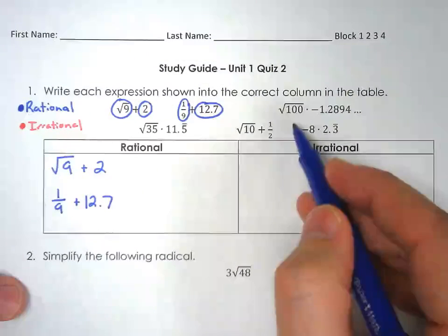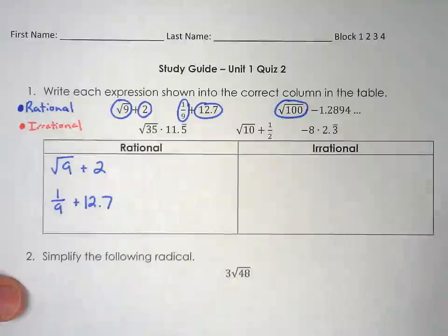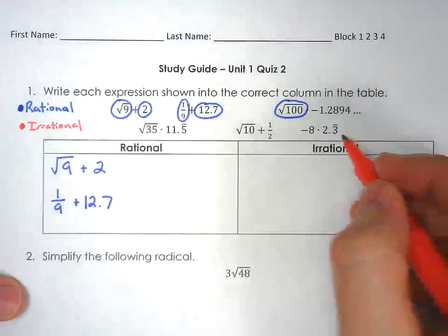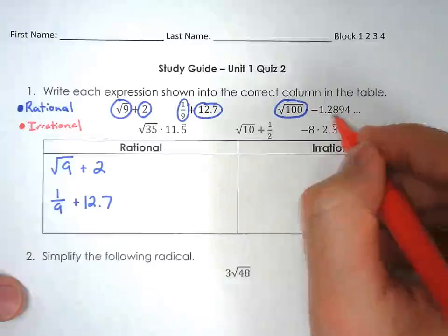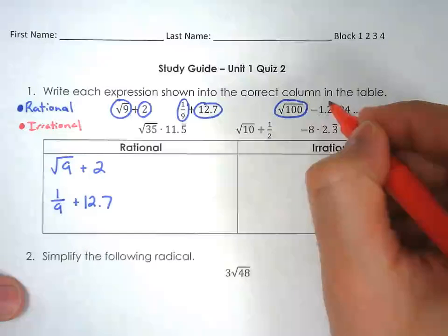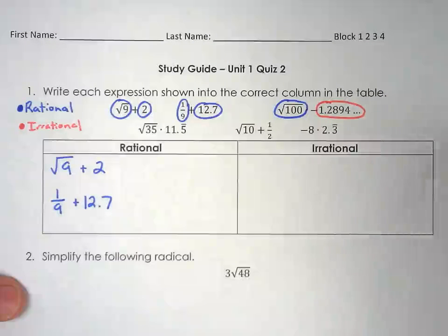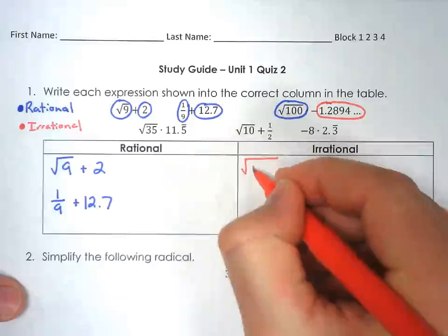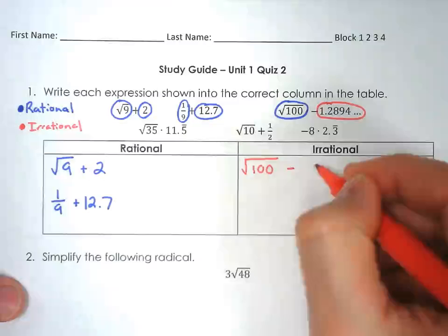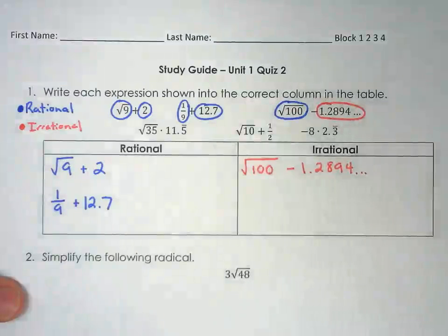Let's take a look at the next one here. We've got the square root of 100. Well, 100 is a perfect square. So that would be considered to be a rational. But minus 1.2894 dot dot dot. Notice there's no pattern there. Because there's no pattern there and it's going on forever, that right there would be considered an irrational number. That's an irrational number. It's not repeating the same thing over and over again. It's kind of bouncing around. And it's not a terminating decimal. So the answer here would be irrational. Because if you ever have a rational and an irrational together, then it would be considered irrational. So that would go on the irrational side.